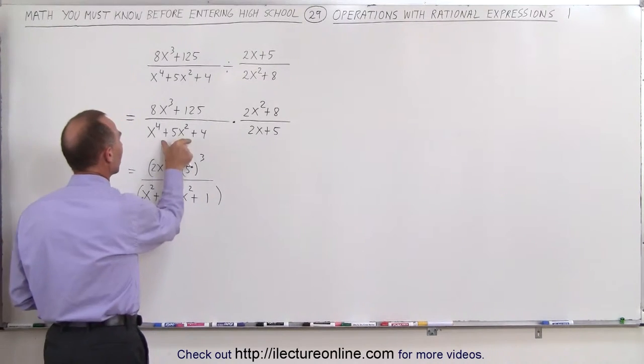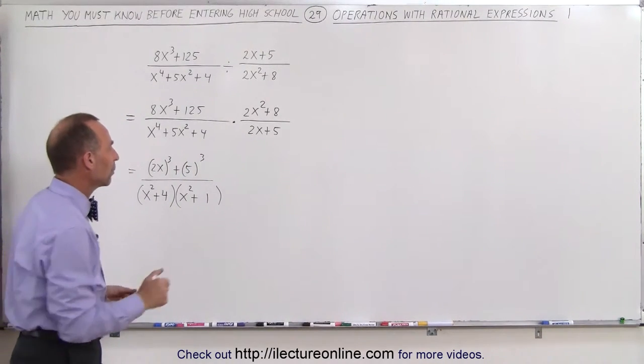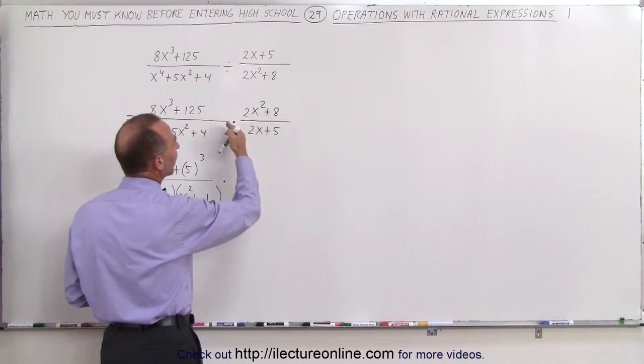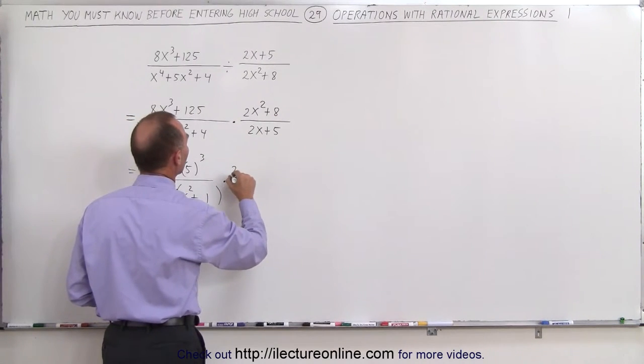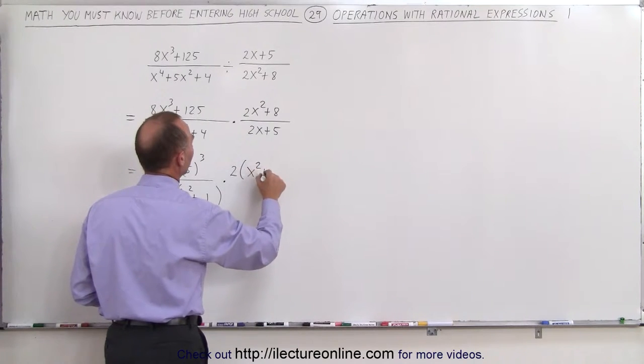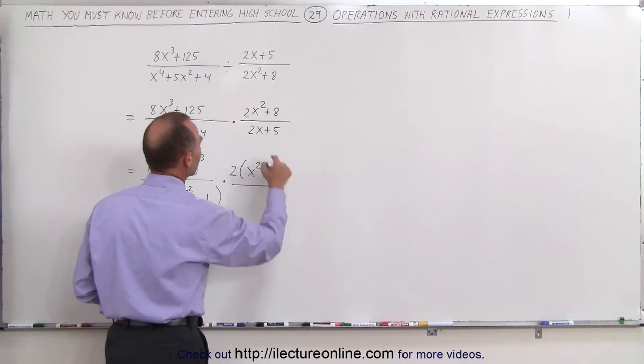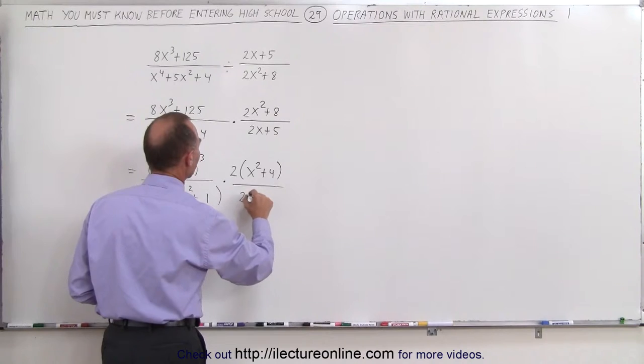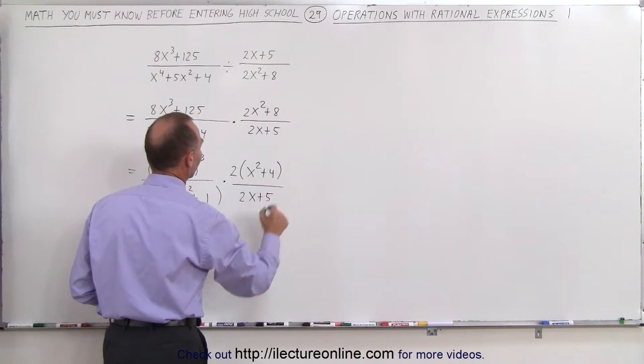Now we multiply this times. Here we can factor out a 2. This becomes 2 times x squared plus 4. And here, well, I can't factor out anything, so this can be written as 2x plus 5.